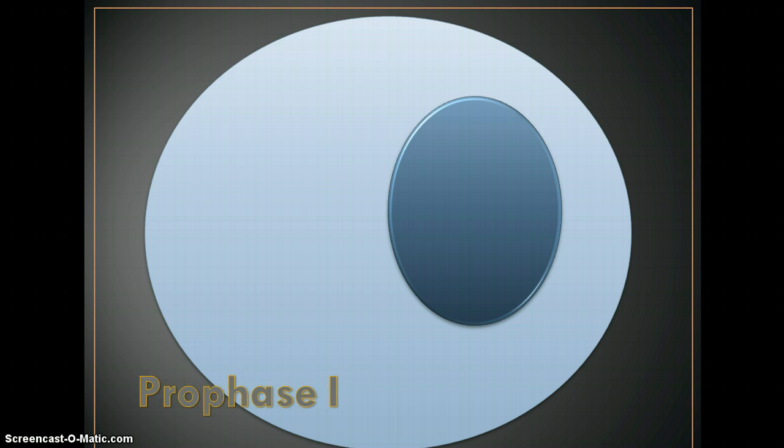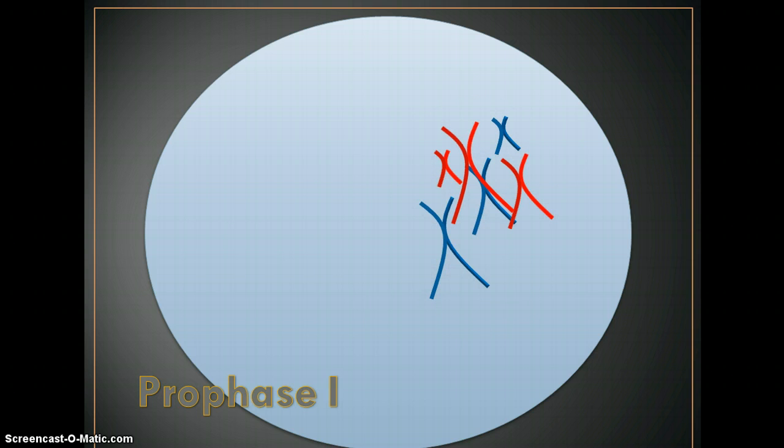A big difference between meiosis and mitosis is there are two steps or stages of meiosis. So notice here we have prophase one. There will also be a prophase two. It will be very important to be able to know those differences and be able to distinguish those on the exam. So in prophase one the nucleus breaks down and the chromosomes condense so that they can be seen even with the microscope.